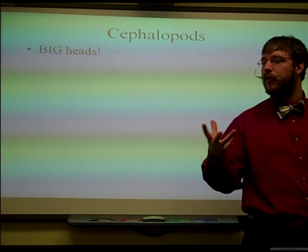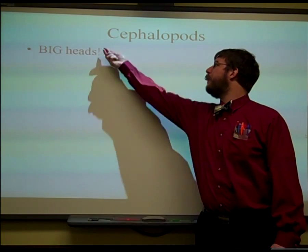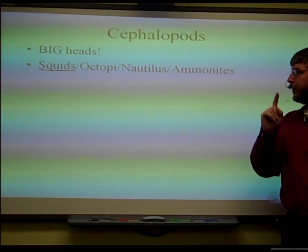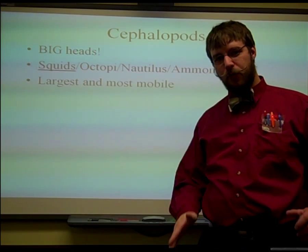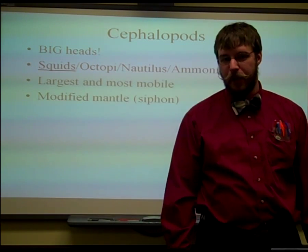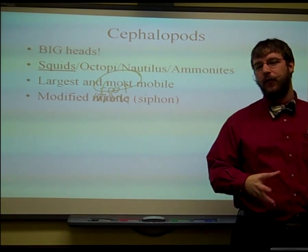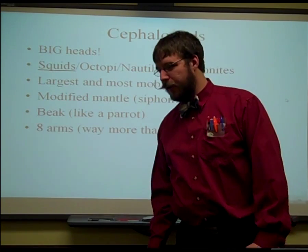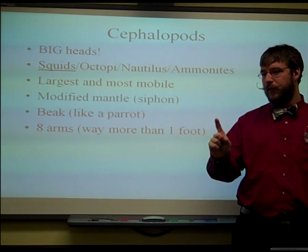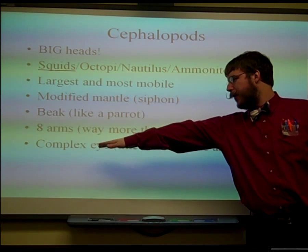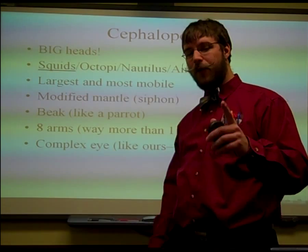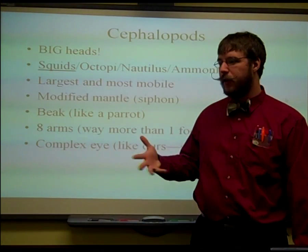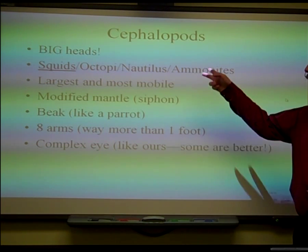Cephalopods are the ones we care most about because they're the most successful. They've got that big head, which is why they're called cephalopods — 'cephal' means head. The one we're going to cut up is the squid, but keep in mind there are also octopi, nautilus, and ammonites, which are crazy — you should Google it. They're the largest, most successful, and most mobile group. Their foot has been modified into a siphon off their mantle, and they've got a beak that looks strikingly like a parrot's beak. All of them have at least eight arms. They also have a complex eye very similar to ours — many actually have vision better than ours, especially the octopi.